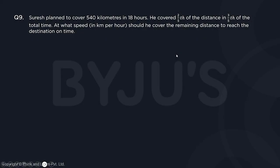Question number 9. Suresh planned to cover 540 kilometers in 18 hours. He covered 2 fifths of the distance in 3 fifths of the total time. At what speed in kilometers per hour should he cover the remaining distance to reach the destination on time?